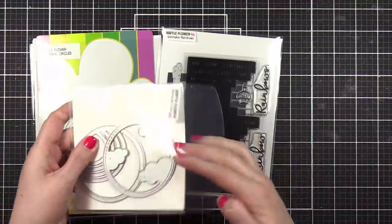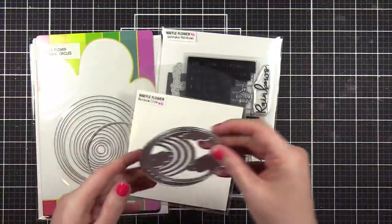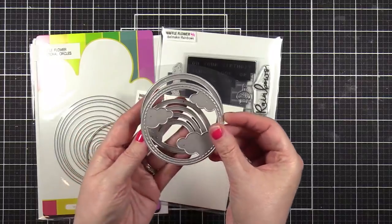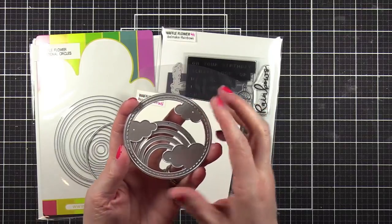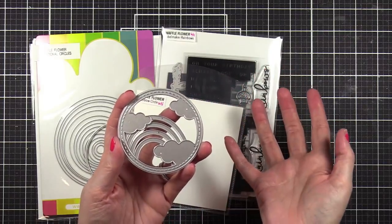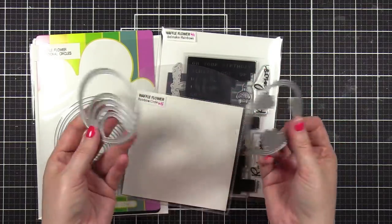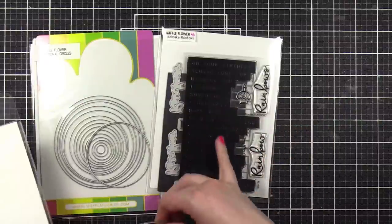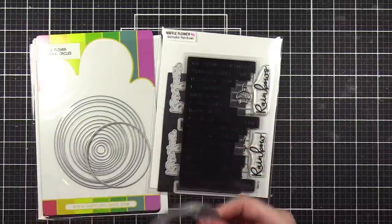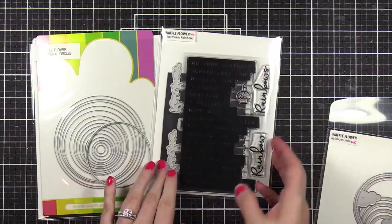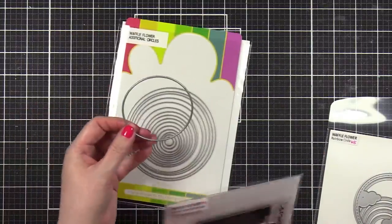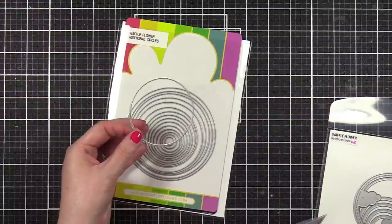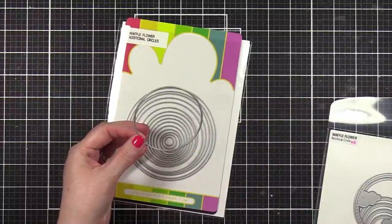These circles are the same size and then you can layer them up and you have like a whole cloud rainbow situation. Isn't that so cute? So I'm gonna go ahead and get going on these. We're gonna use this new label maker rainbow stamp set when we get to the greeting, and I'm gonna use the additional circles die set just because I'm gonna need to cut a circle for the very back of this little doohickey here that I'm planning.